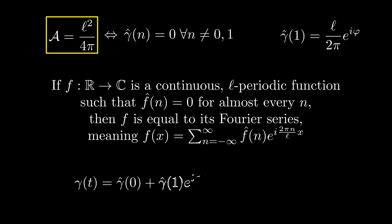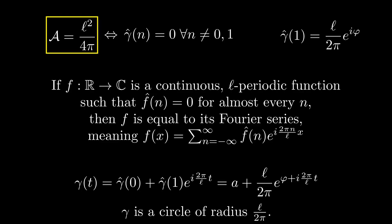In our situation, this leads to the following expression of gamma. This is exactly the parametric equation for a circle with radius l divided by 2 pi. The 0th Fourier coefficient determines the center of the circle, and the first one determines the initial angle of the parametrization.